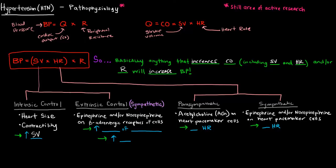Extrinsically, the sympathetic nervous system releases epinephrine and norepinephrine onto beta-adrenergic receptors. Epinephrine is a hormone and norepinephrine is a neurohormone. What these do is increase the force of contraction of the heart, which increases stroke volume — if the heart contracts with greater force, it can expel more blood.